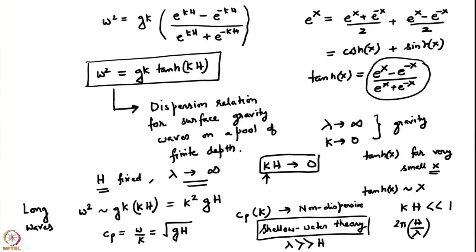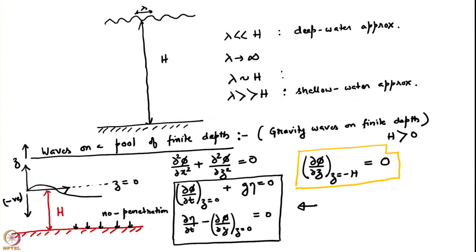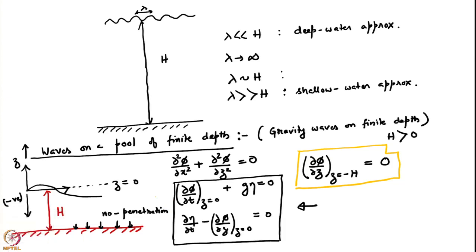For a pool of finite depth with wavelength comparable to depth, one can incorporate the effect of surface tension — I leave this as a homework problem. You need to modify the Bernoulli equation to include the additional term T/ρ times the divergence of n, then find the matrix whose determinant gives the dispersion relation for capillary gravity waves on a pool of finite depth.